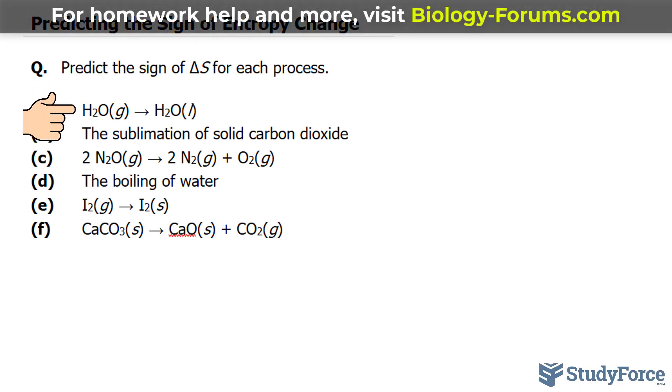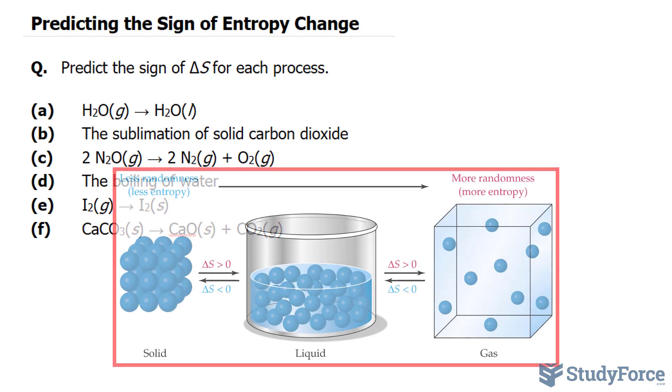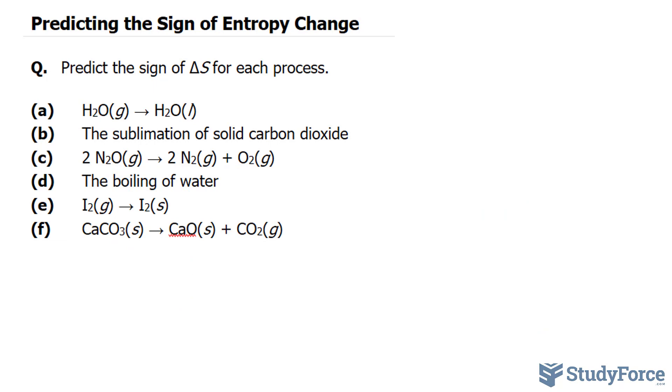In question A, we have H2O gas forming H2O liquid. Since a gas generally has a higher entropy than a liquid—gases have more disorder than liquid molecules—the entropy decreases from gas to liquid. It becomes more orderly, and delta S, therefore, is negative.